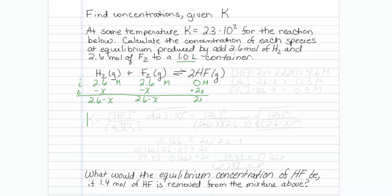Our equilibrium expression is equal to the HF concentration squared over the H₂ concentration times the F₂ concentration. And we are told that value is equal to 2.3 times 10 to the second power.